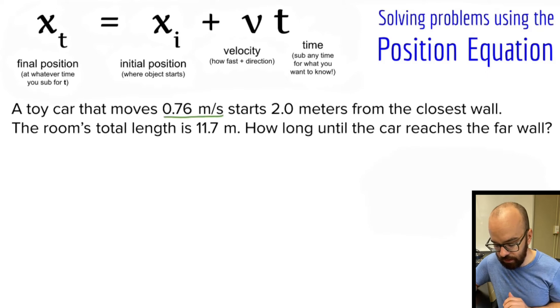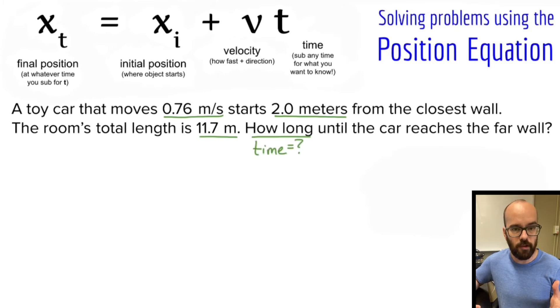Alright, let's solve our problem now. It says a toy car that moves 0.76 meters per second starts 2.0 meters from the closest wall. The room's total length is 11.7 meters. How long until the car reaches the far wall? When we say how long, we're talking about how much time. So that's what we're solving for in the equation here. Notice a problem-solving strategy that I use: I underlined all the important numbers that I'm going to need. But it's also important, especially as problems get more challenging, that we don't just blindly substitute those numbers in. I find it really helpful to draw out a picture so I can visualize what I'm trying to figure out. It doesn't have to be a complicated picture, but it's a way for us to visualize what we're doing. I find it's best to have things written out in words and pictures and equations. The more things we use, the better we can understand what we're doing, especially as problems get more complicated in physics.